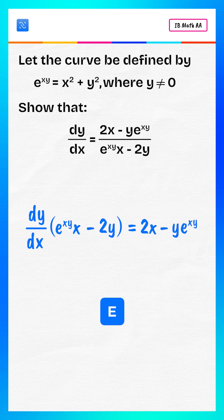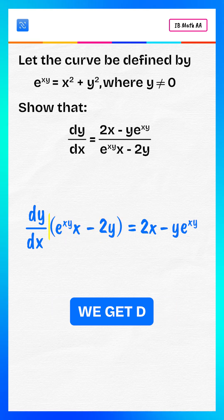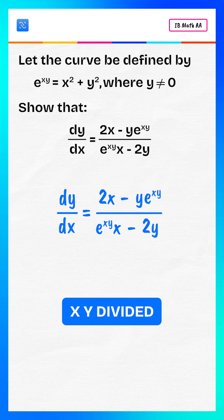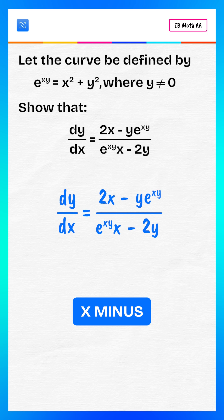Divide both sides by e to the power xy multiply x minus 2y. We get dy by dx equals to 2x minus y multiply e to the power xy divided by e to the power xy multiply x minus 2y.